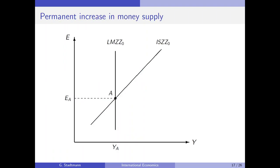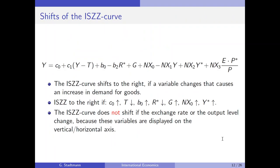The starting point of our analysis is point A, where we have an equilibrium in the economy: GDP is very low and unemployment rates are high. We want to find out what happens if the central bank increases money supply. Checking the IS-ZZ relationship, money supply is not included in it, so the IS-ZZ curve does not shift.